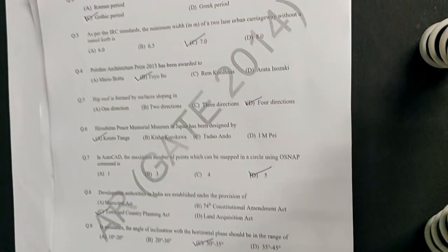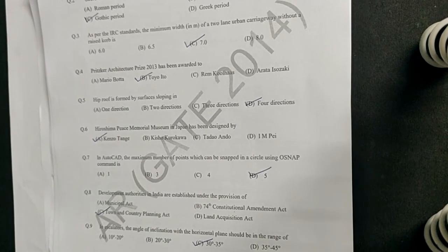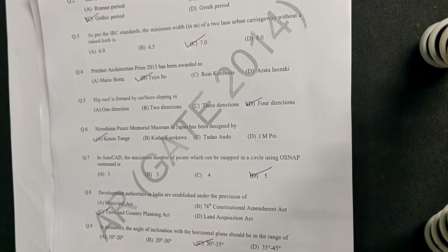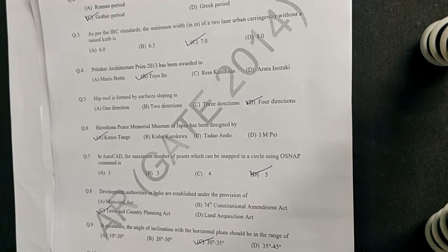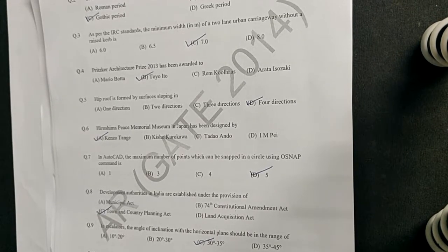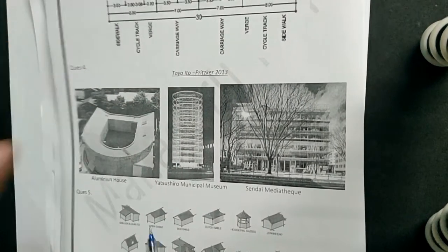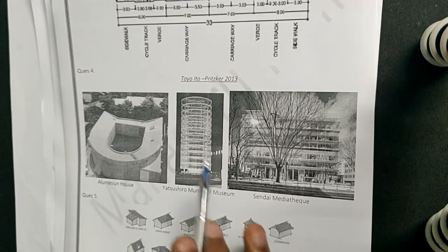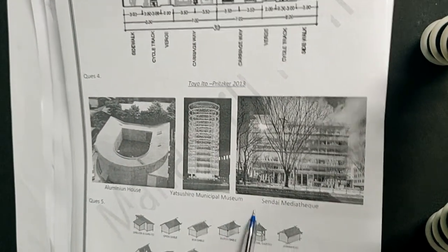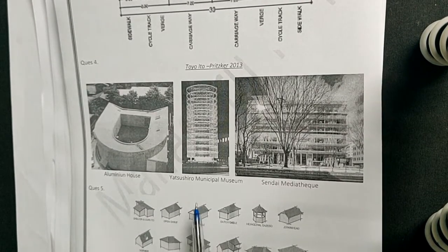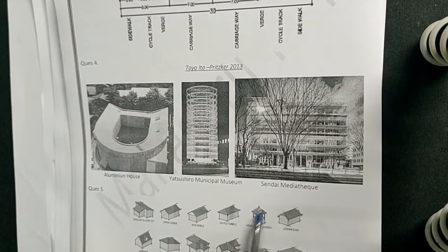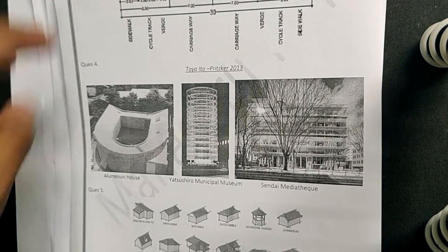The next question: the Pritzker Award for the year 2013 was awarded to whom? This is a very direct question and the answer is Toyo Ito. Toyo Ito is famous for the Aluminum House, Yatsushiro Municipal Museum, and the Sendai Mediatheque, which is a library.